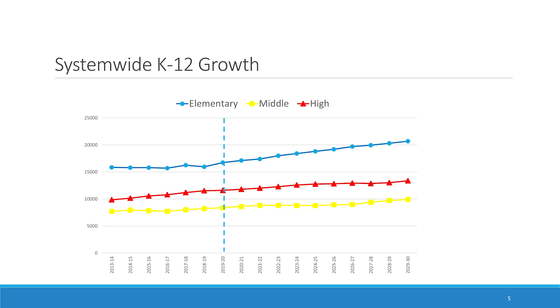That is because it is young families that are moving in with young children who are at the elementary school level or lower. That population then ages up through the system, creating gains at the middle and high school levels as well.